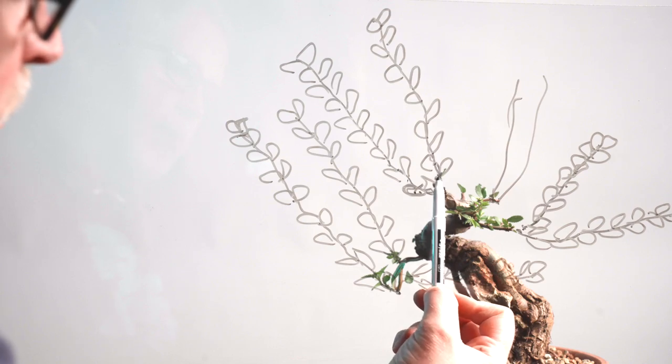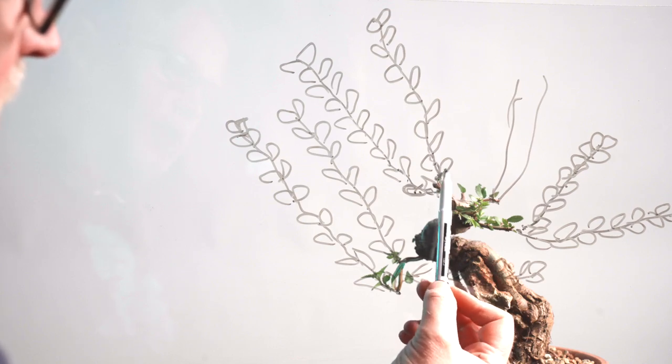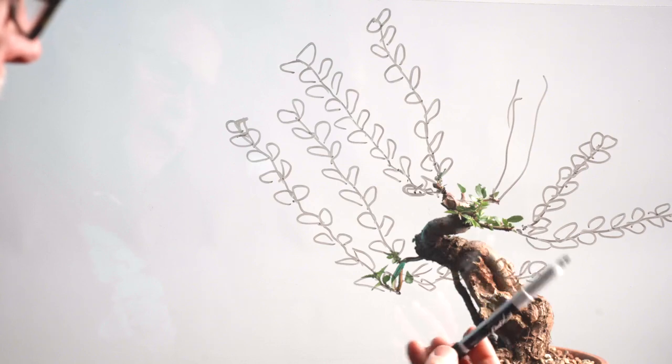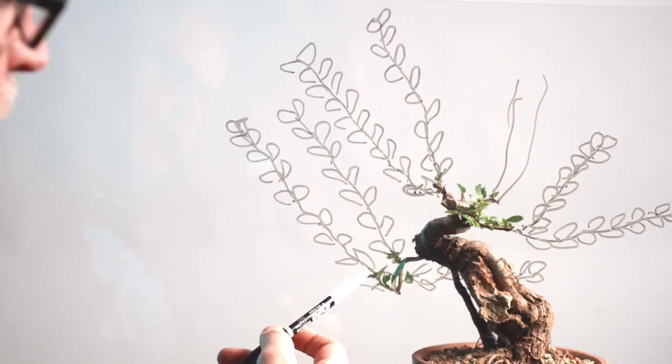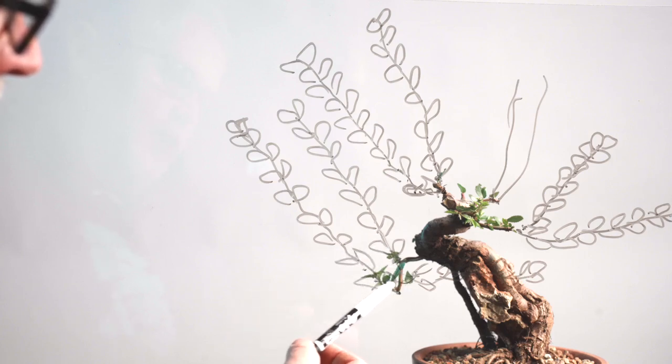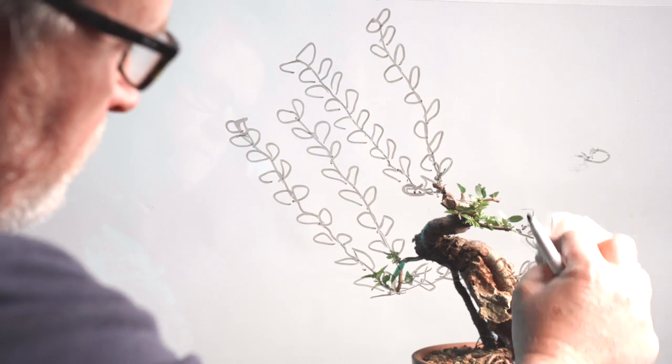But in the case of this branch which is continuing the development of our top, we're going to need to wire it before we allow the wood to really set in there. And the same thing is true for these low branches on this side, because if we just let them go upward and get big it's not going to create the pad structure that we need in order to create some nice ramification down here.